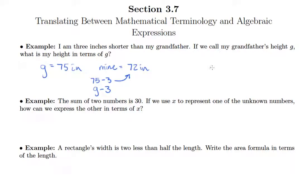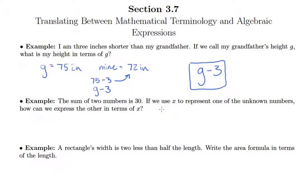This is what it means to write my height in terms of my grandfather's. Whatever my grandfather's height is, take three away from it. So G minus three is the answer.